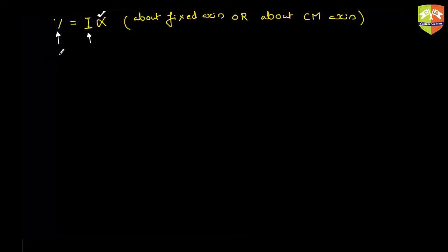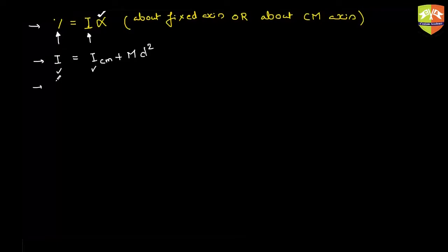You should be aware of the parallel axis theorem: I equals I_cm plus total mass of the rigid body times d squared, where the two axes must be parallel. For a planar object, the perpendicular axis theorem gives I_z equals I_x plus I_y, where I_z is the moment of inertia perpendicular to the surface of the object.